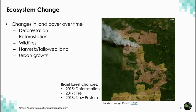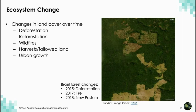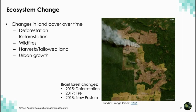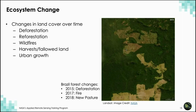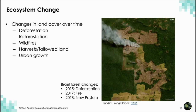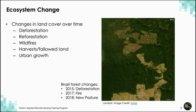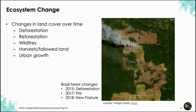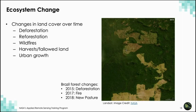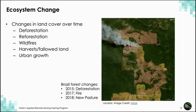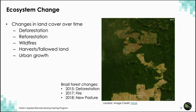Ecosystem change is really important for conservation and biodiversity research and applications. The evaluation of changes from forest to non-forest is one of the most common types of changes that we observe and map using remote sensing data. Here you can see an animation from Brazil where we see changes to the landscape from deforestation, then a fire, and then new pasture lands being developed.